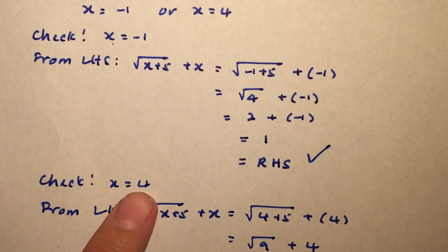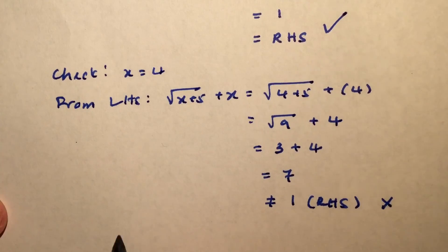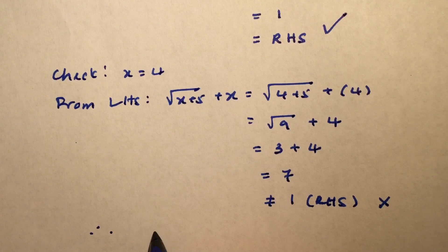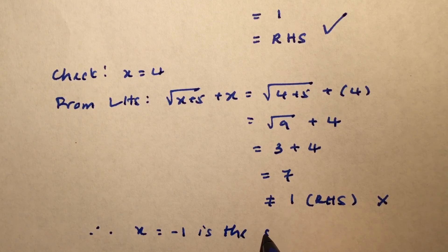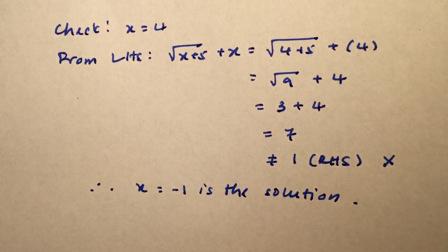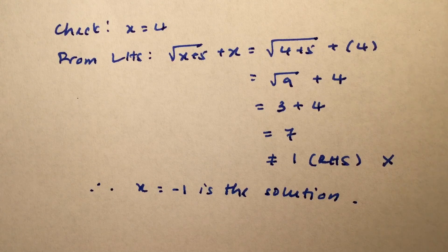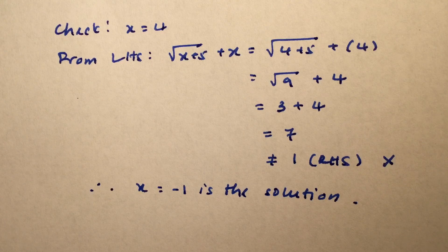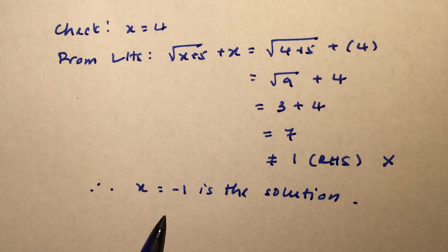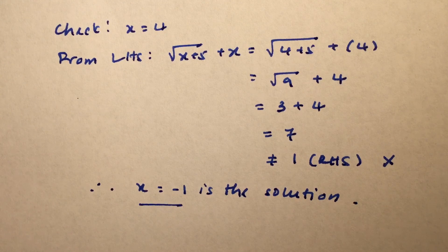Therefore, we're going to write down x equals to negative 1 is the solution. Do not always blindly accept that there might be two answers. You always have to verify to see whether it is possible that both are valid, but it's also possible that only one is valid. In this case here, only one of the x value was valid.